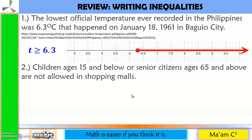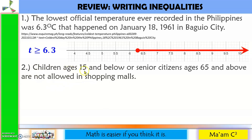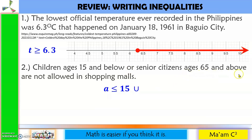Number 2: children ages 15 and below or senior citizens ages 65 and above are not allowed in shopping malls. For children ages 15 and below, the maximum age is 15, so A is less than or equal to 15. Union — ages 65 and above: the minimum age is 65, so A is greater than or equal to 65.